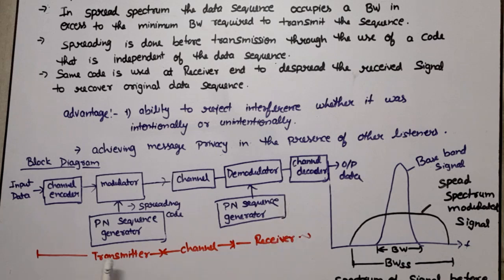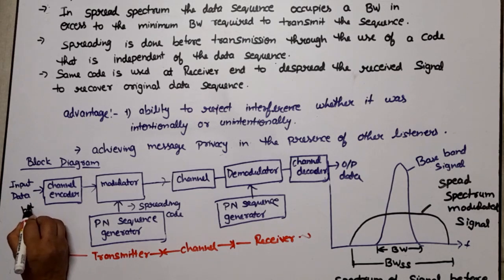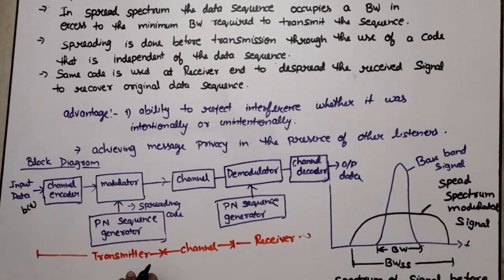What we spread, we bring back to its original bandwidth. After demodulation signal is applied to the channel decoder. Channel decoder performs just reverse process of encoder, same technique is used for decoding. After decoding we get the original signal, but this is our ideal case.